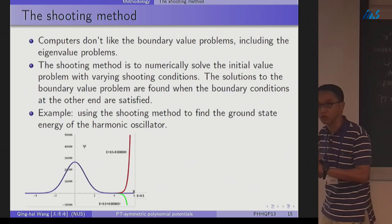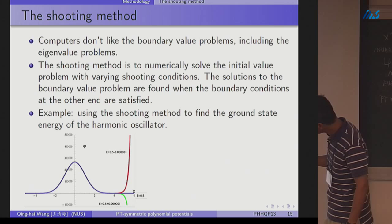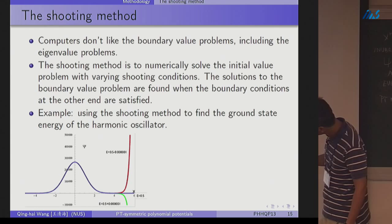The initial condition and the derivative initial condition is WKB approximation. So if I guess wrongly, it works well, then it exponentially grows.